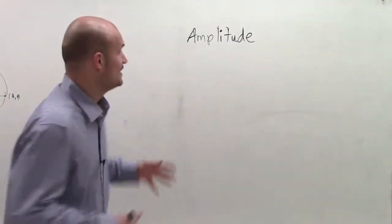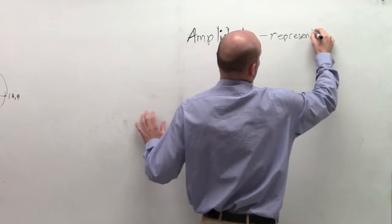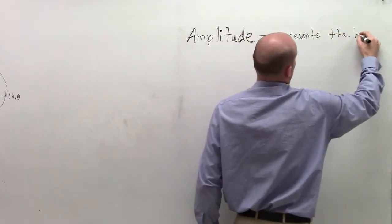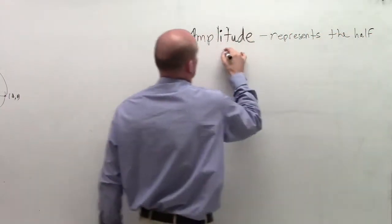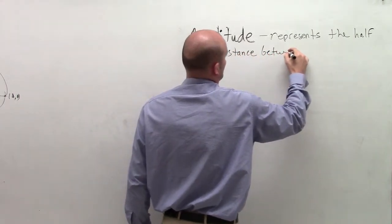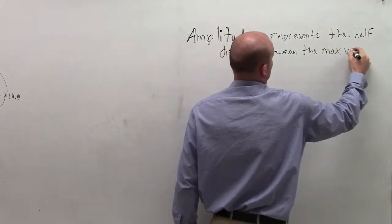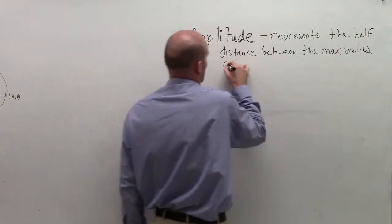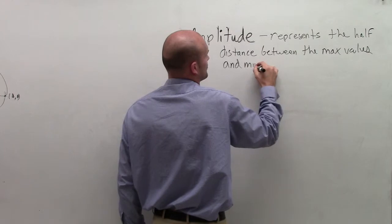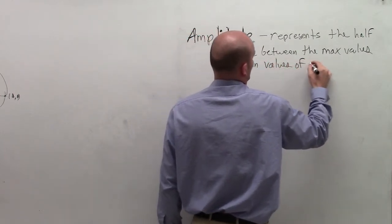So now what we're going to deal with is amplitude. Amplitude represents the half distance between the max values and minimum values of your graph.